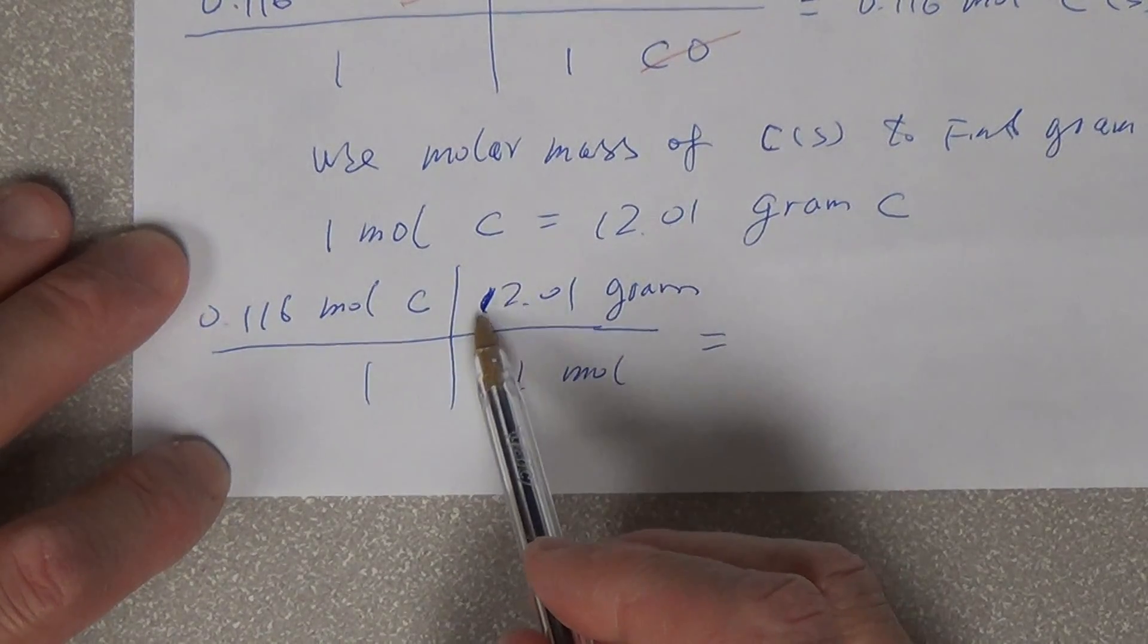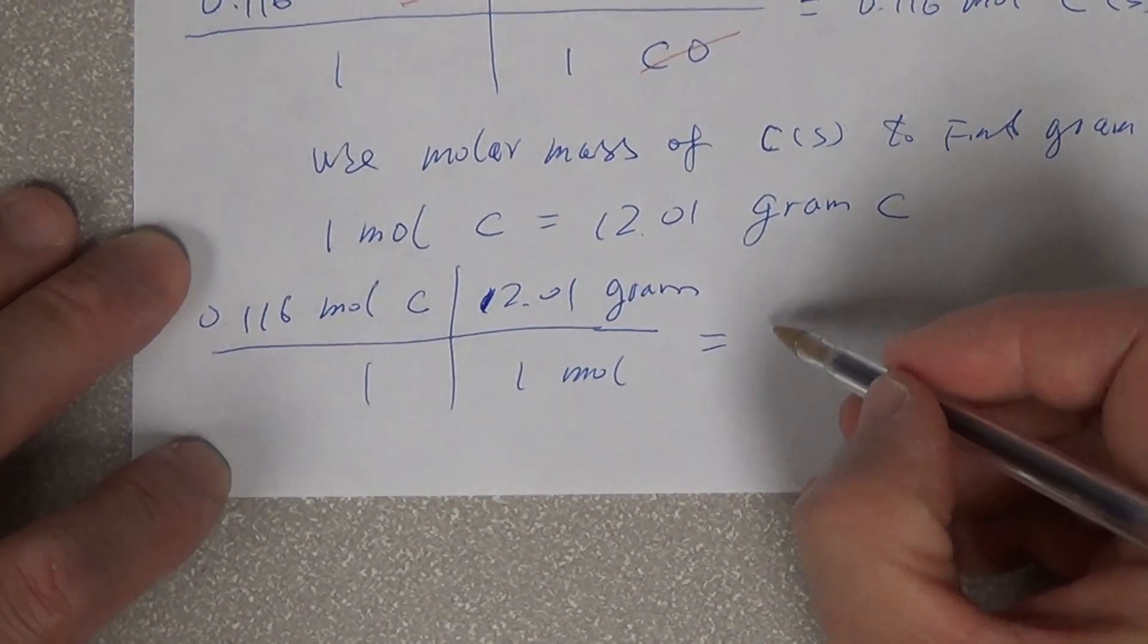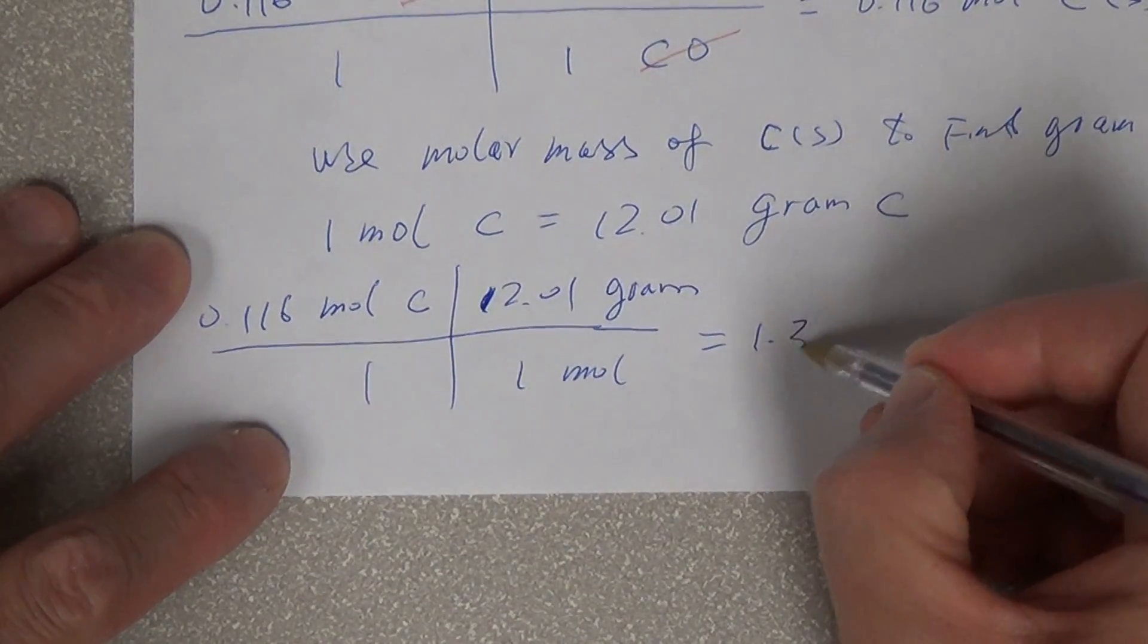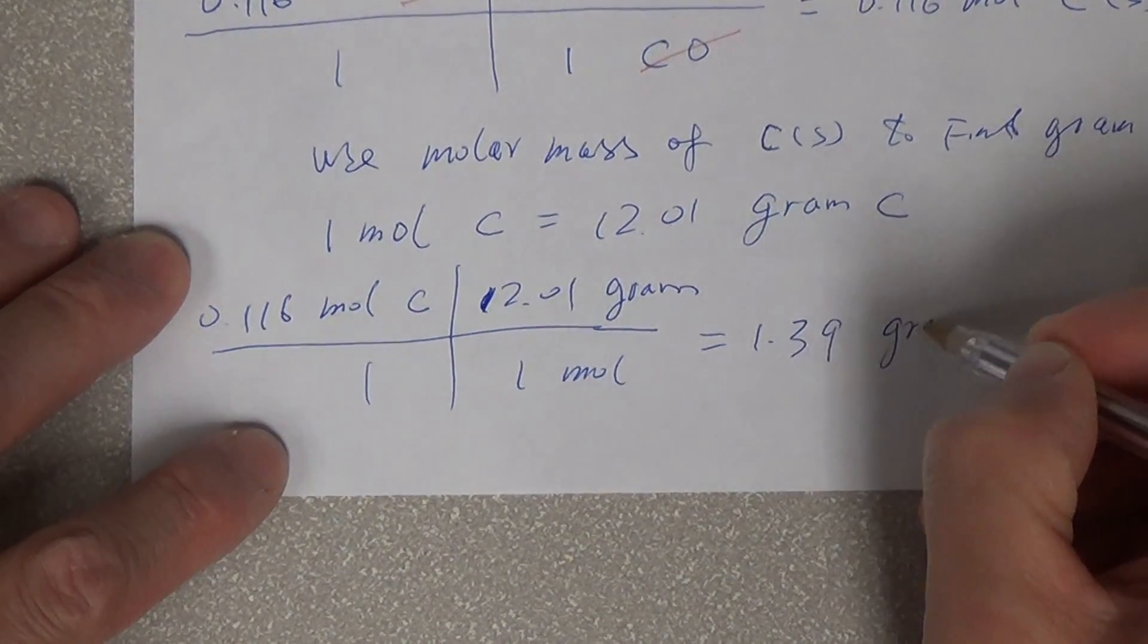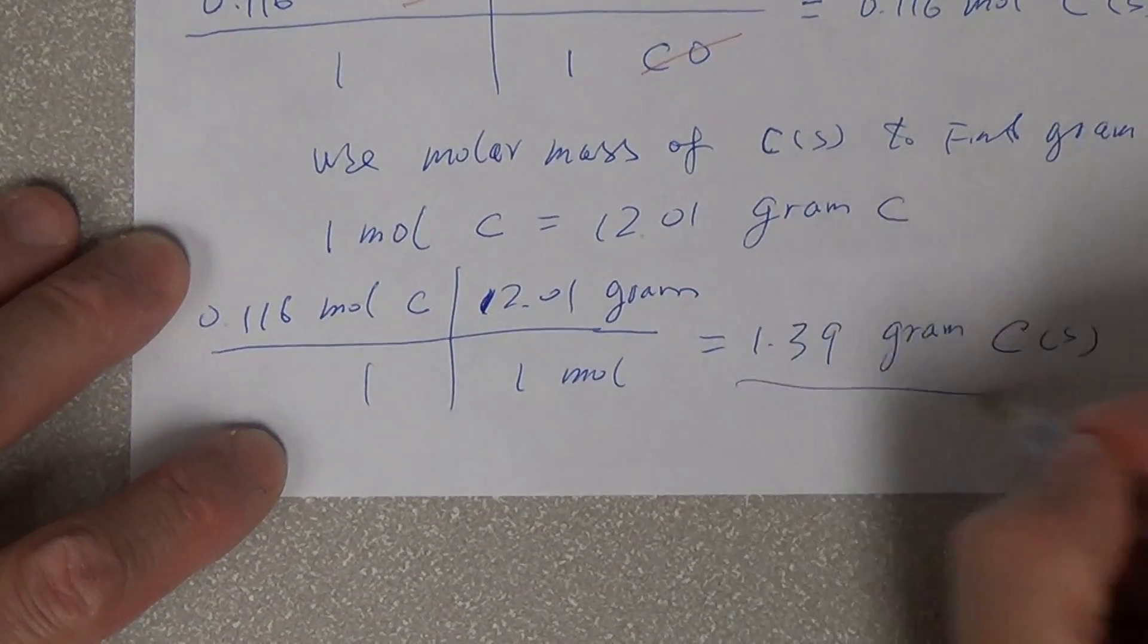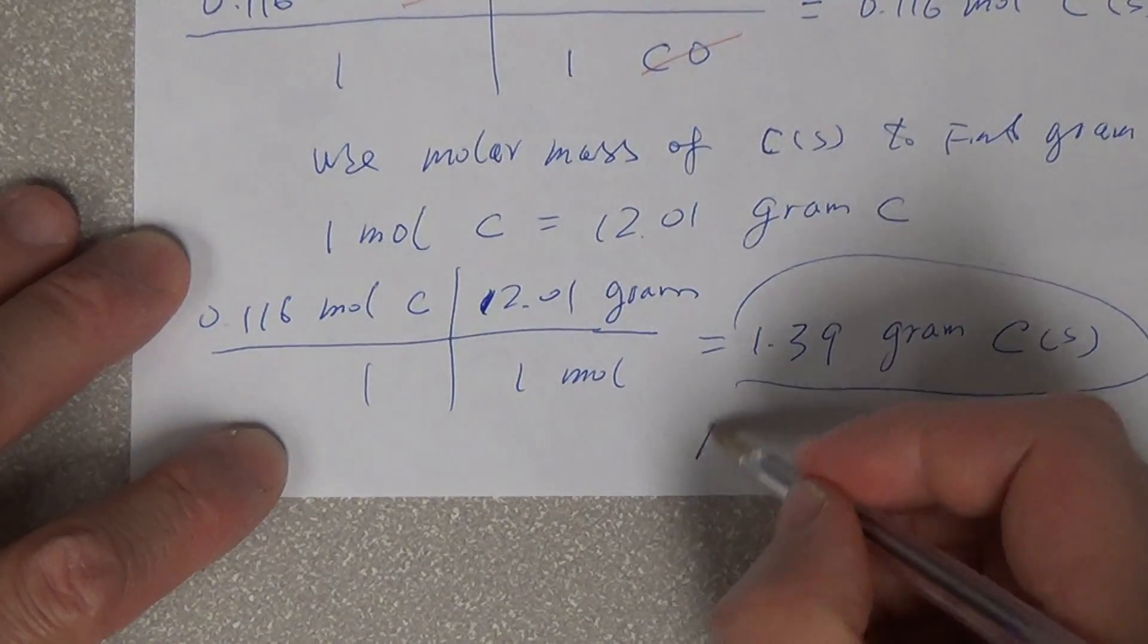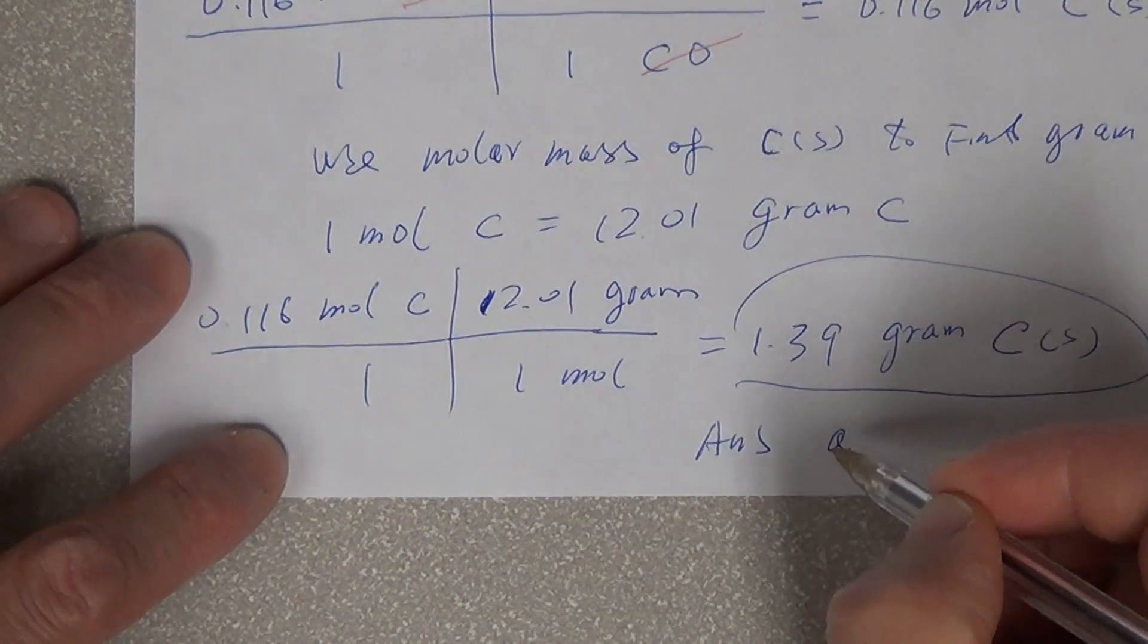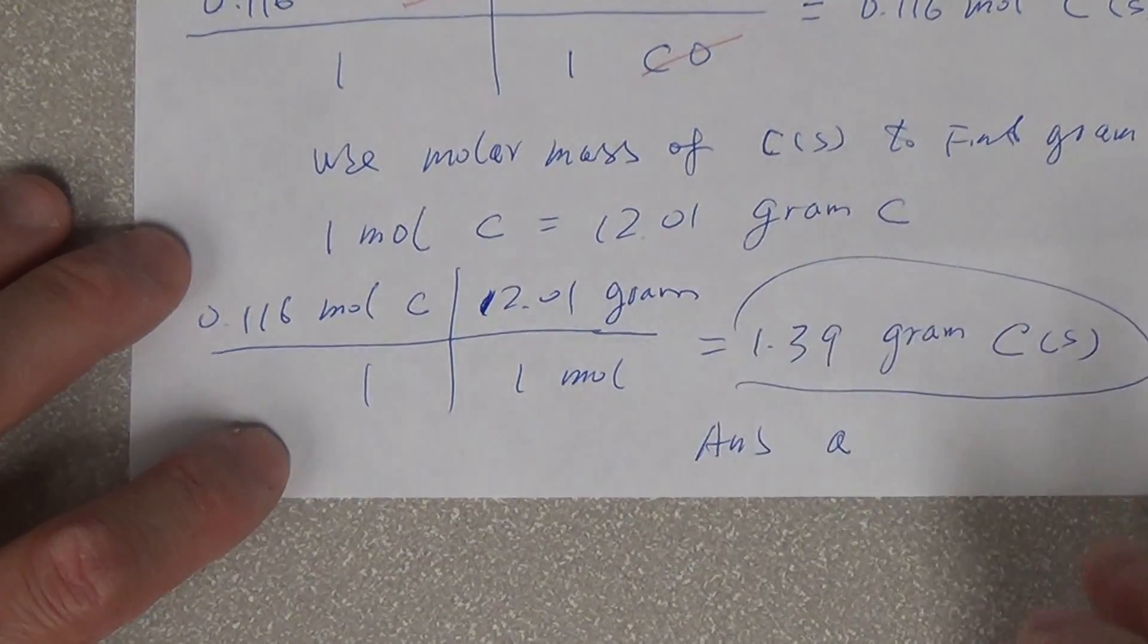So therefore we just take 0.116, multiply by 12.01, and get 1.39 grams of C or C solid. So therefore the answer is A. Okay, so that's Chapter 15.